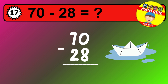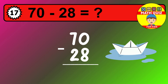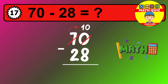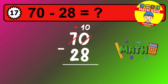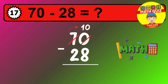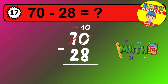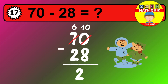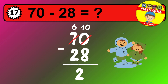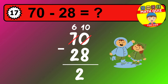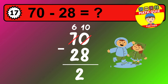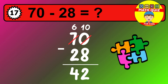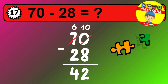Let's solve this step by step. We start with the units. Zero minus eight is not possible, so we need to regroup. We take one ten from the tens column. Now we have six tens, and the units become ten. Now we subtract. Ten minus eight is two. Then we go to the tens. Six minus two is four. The final answer is forty-two.